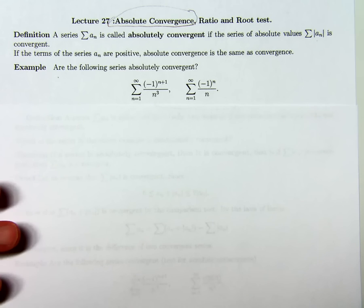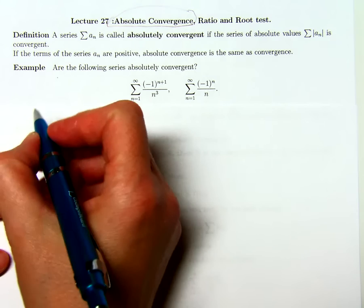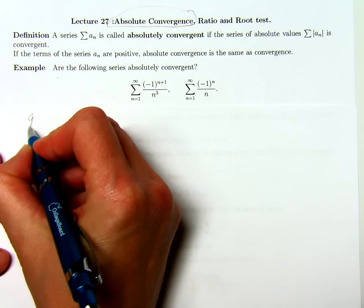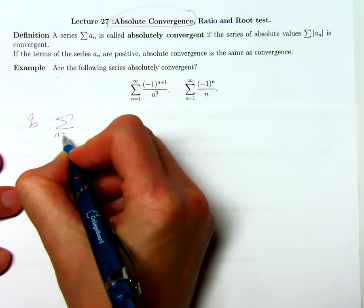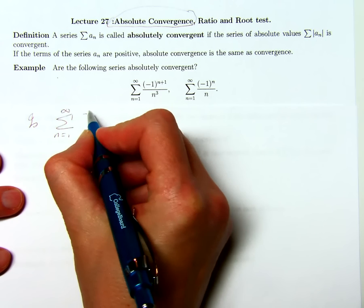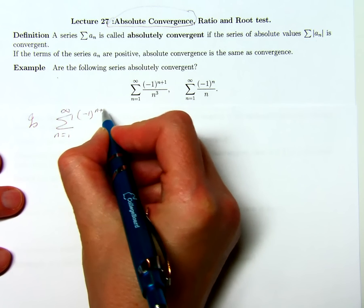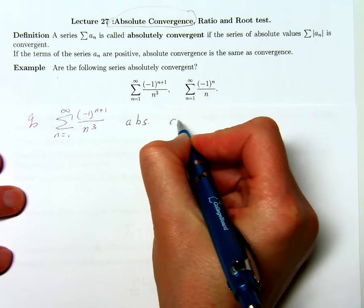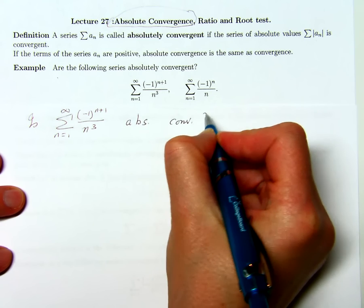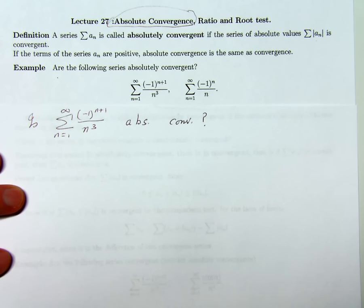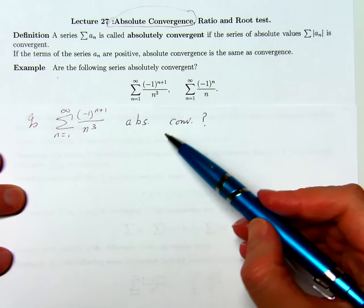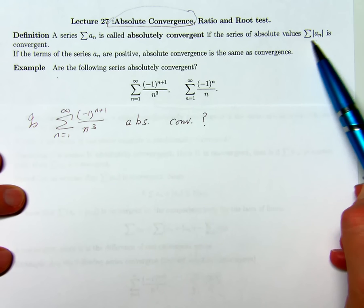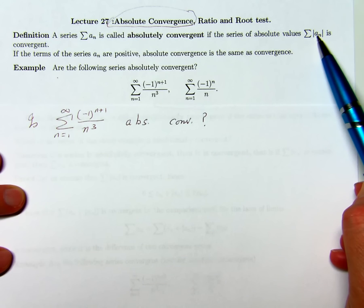Suppose I want to decide if one of these alternating series is convergent. The question is: is the sum from 1 to infinity of (-1)^(n+1) over n³ absolutely convergent? According to the definition, this is absolutely convergent if the sum of the absolute values is convergent.